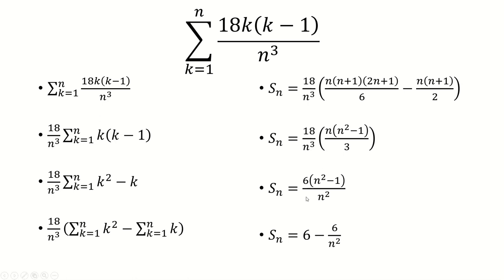And then we would basically split this up into two fractions. 6n squared over n squared is 6. And then we have negative 6 over n squared.